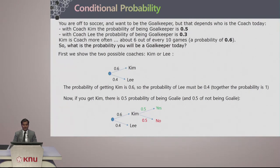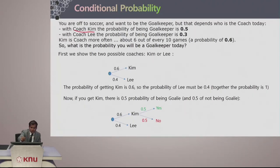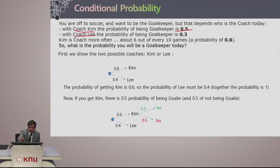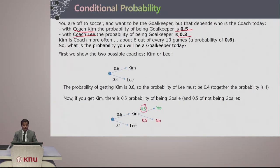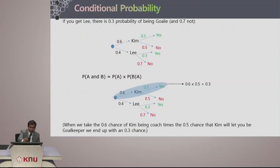Let us see the two possibilities. We know the probability of Kim being the coach is 0.6 and probability of Lee is 0.4. If you get Kim, there is a 0.5 probability of being a goalie. If it is Lee, then it is going to be 0.3. We can put that in a tree graph — you have a 0.5 chance of being a goalie if Kim is the coach, and a 0.3 probability if Lee is the coach.